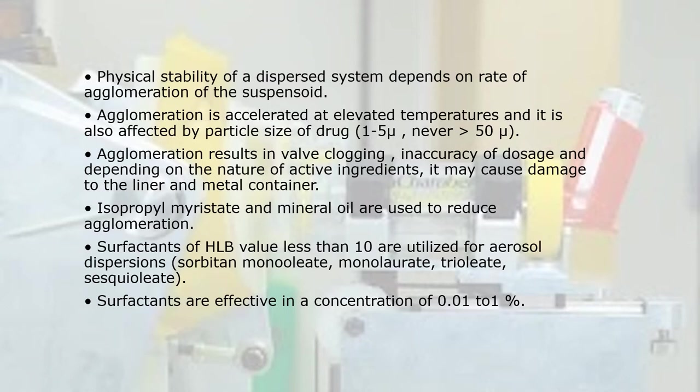Isopropyl myristate and mineral oil are used to reduce agglomeration. Surfactants with HLB value less than 10 are used for aerosol dispersion — e.g., sorbitan monooleate, monolaurate, trioleate, and sesquioleate. Surfactants are effective at a concentration of 0.01–1%.